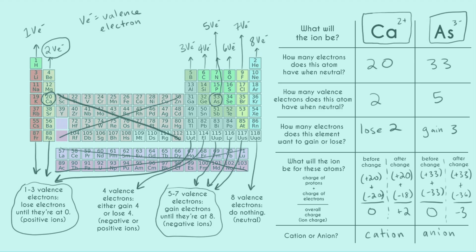We can now summarize the general charge trends across the periodic table: one valence electron creates a +1 ion; two valence electrons create a +2 ion; three valence electrons create a +3 ion; four valence electrons create either +4 or −4; five valence electrons create a −3 ion; six valence electrons create a −2 ion; seven valence electrons create a −1 ion; and eight valence electrons remain neutral with a charge of zero.